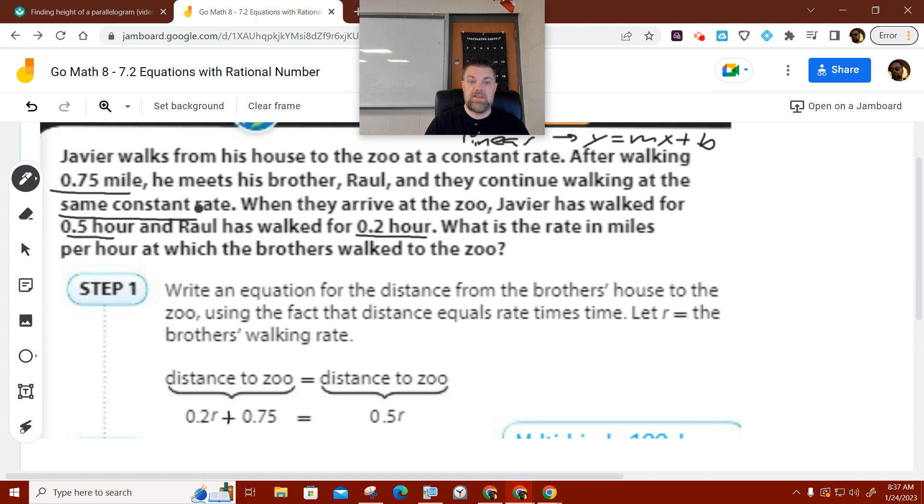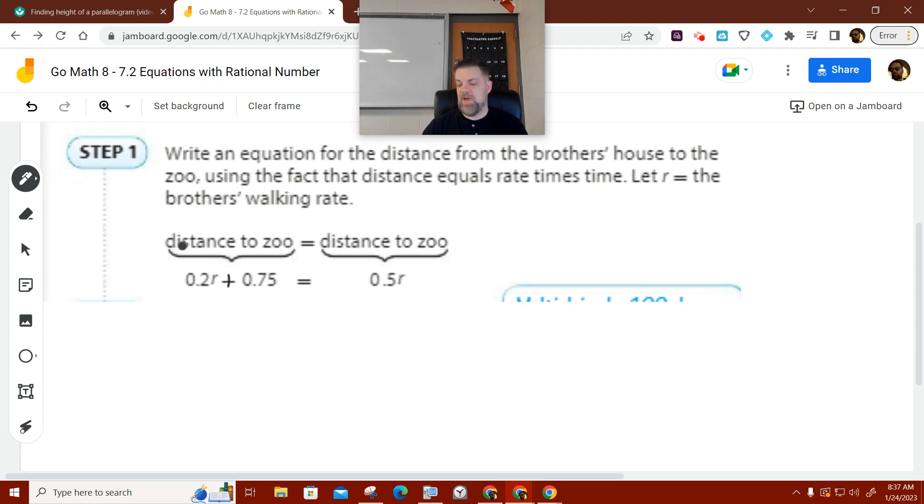In other words, Javier walks from his house to the zoo at a constant rate, which is R, after walking 0.75 miles. He meets his brother Raul. Raul was just kind of standing around or something. And they continue walking at the same constant rate. They walk together. When they arrive at the zoo, Javier has walked a half hour total and Raul has walked 0.2 hours. So that's where the setup comes from. And they want to know what is the rate R.